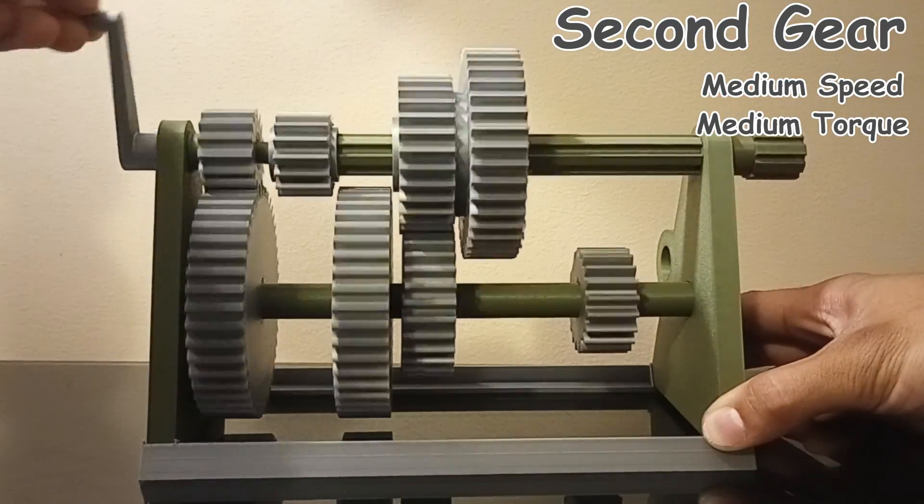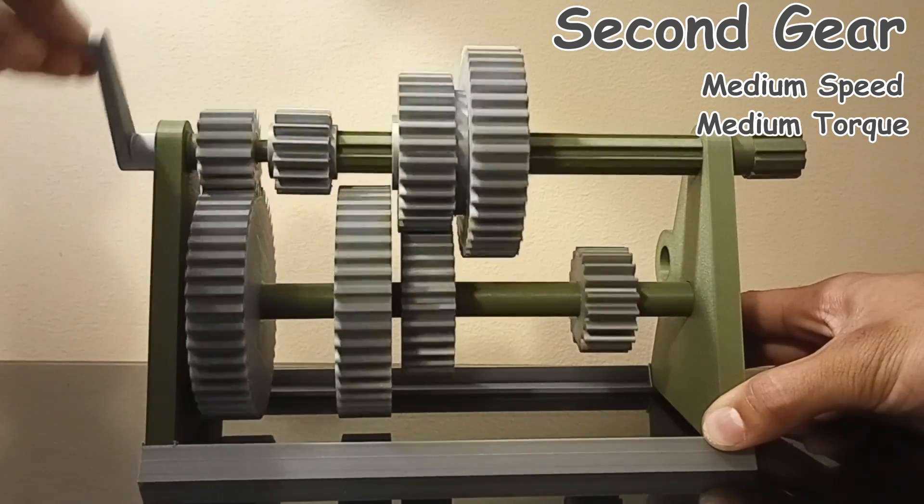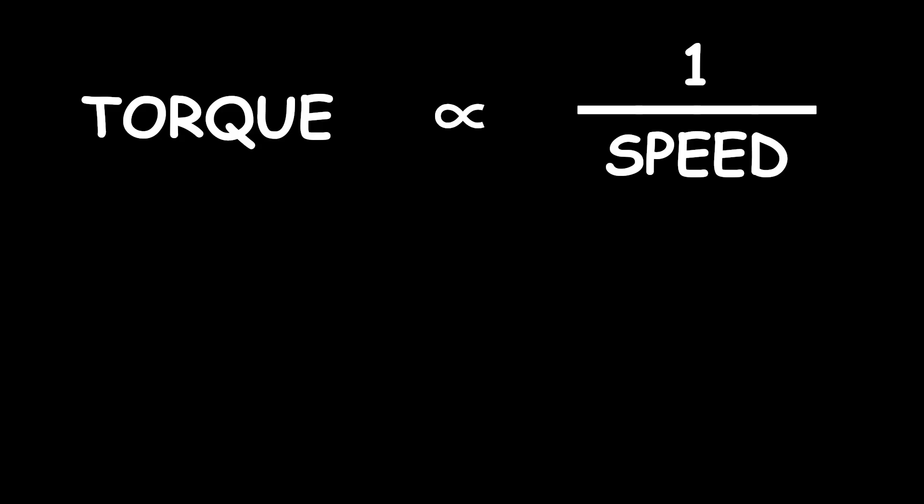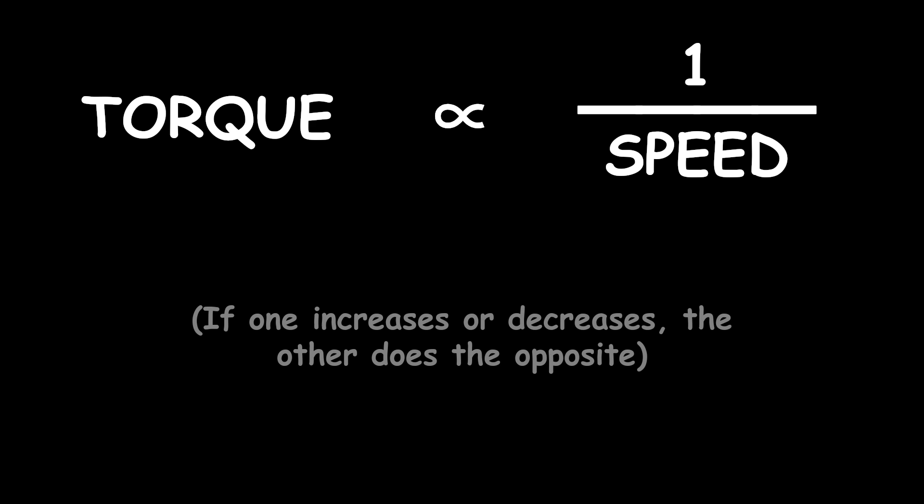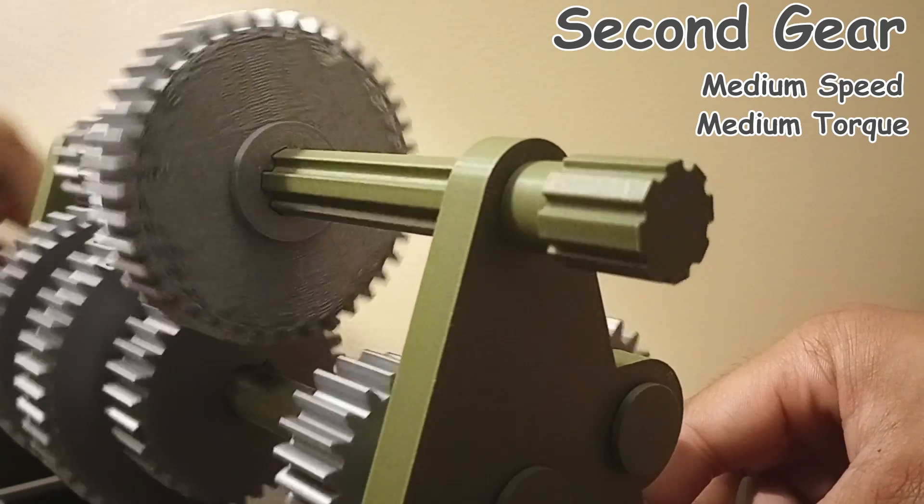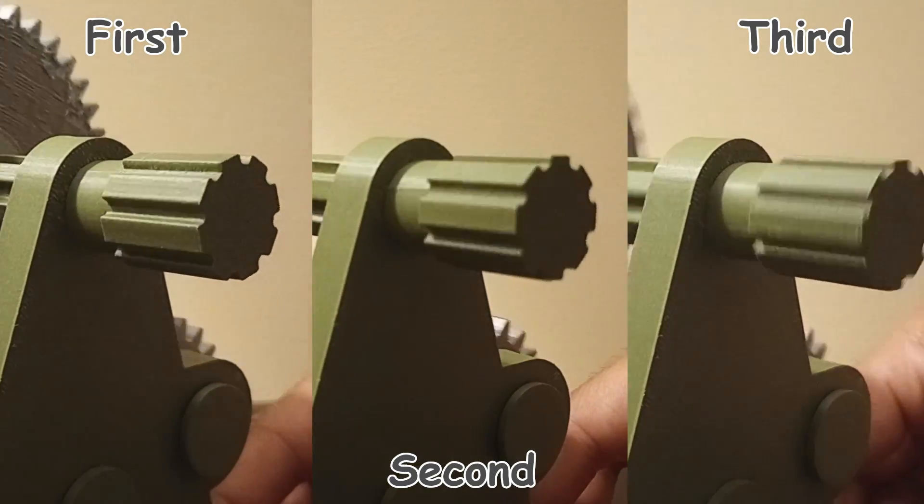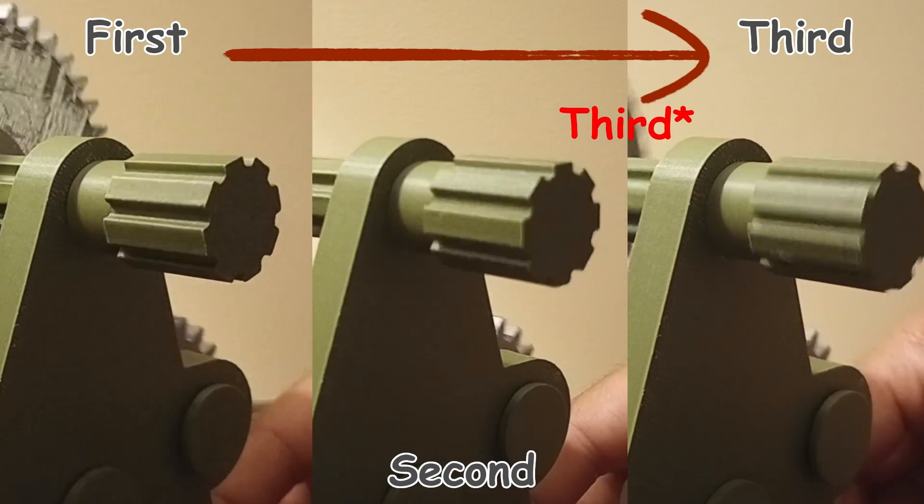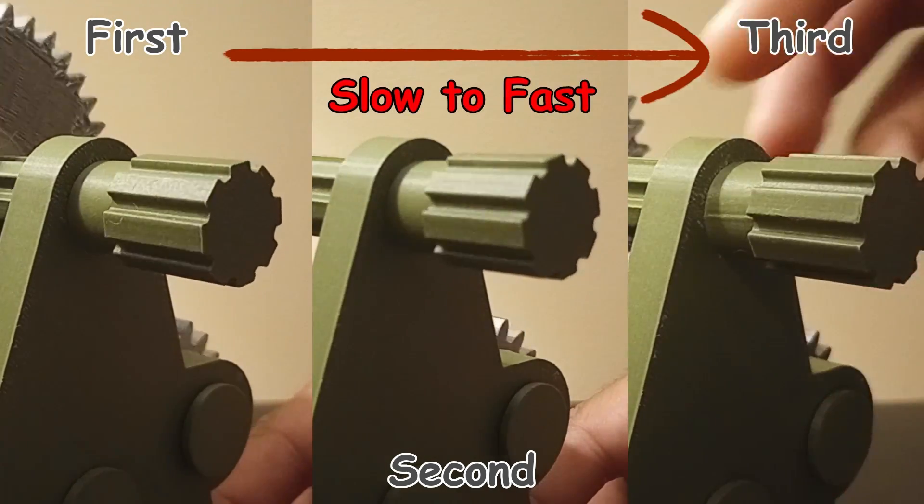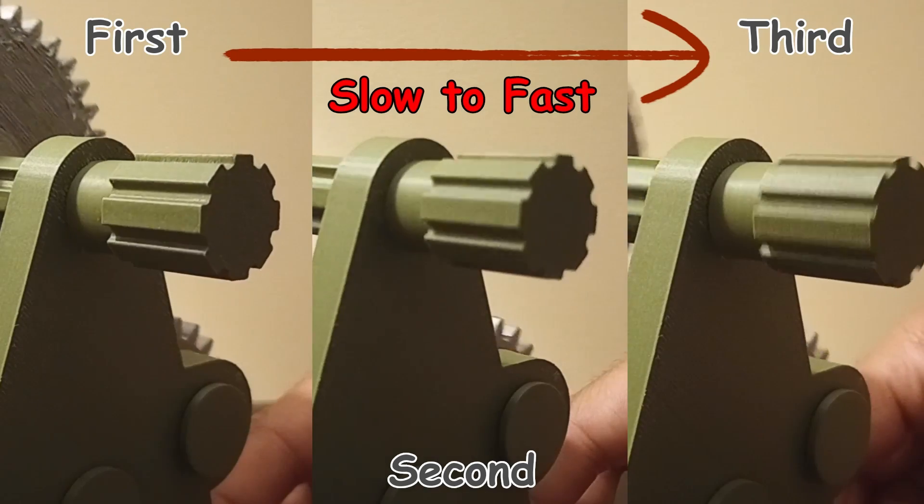Now you're probably starting to see a bit of a theme at this point, that being the inversely proportional relationship between rotational speed and torque in gear systems. Now, the reason we'd shift into second gear is to have a more gradual transition between first gear and third gear, since first gear is the slowest setting and third gear is the fastest.